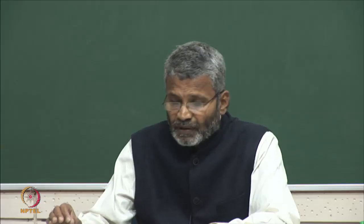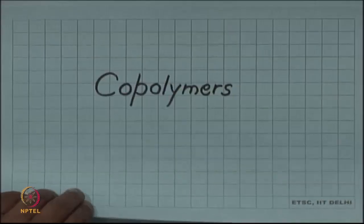The polymers we have discussed were made up of only one kind of monomer, but there are also polymers which can be made with more than one different kind of monomer. Such polymers are called copolymers.